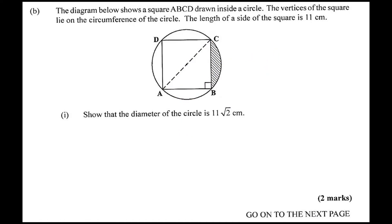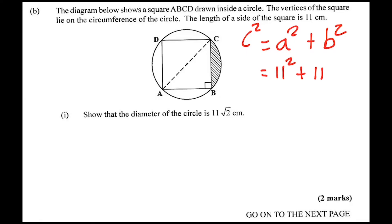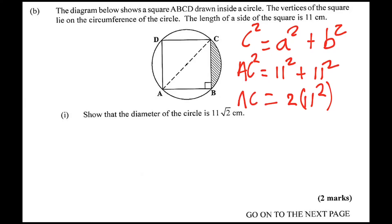For those who don't know Pythagoras, C squared equals A squared plus B squared. Both sides are eleven, so eleven squared plus eleven squared equals AC squared. That is two times eleven squared, equal to AC squared. To find AC — which is the diameter — you take the square root. The square root of two times eleven squared gives you eleven root two, and that's right there in front of you.